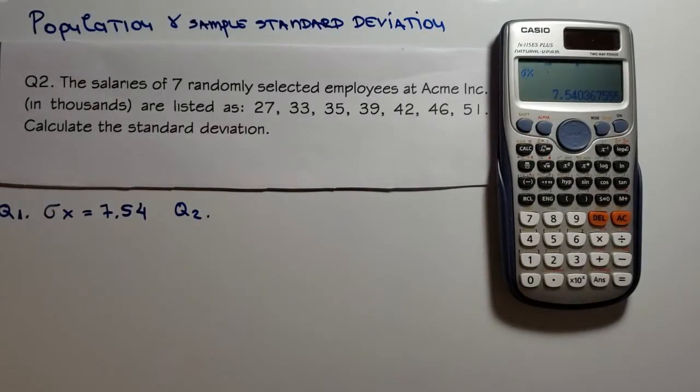We see now we have seven randomly selected employees. So the company has more employees but we have the data for seven only. So this is sample data and we calculate sample standard deviation.